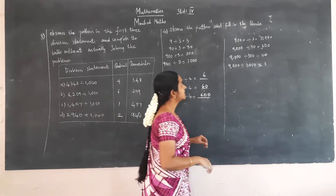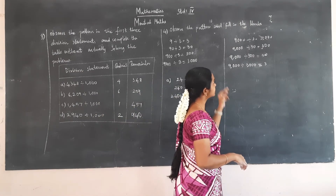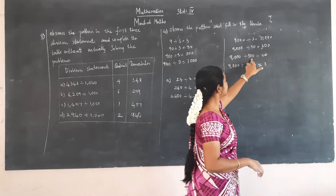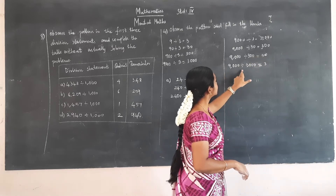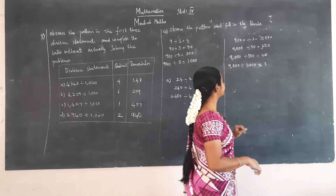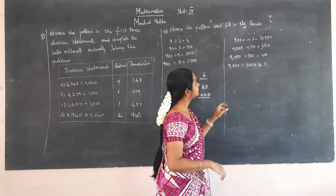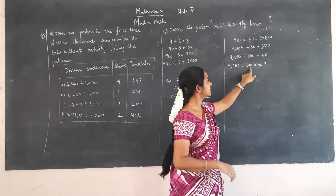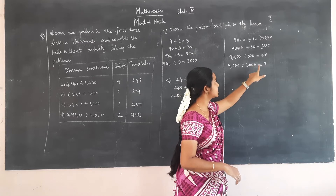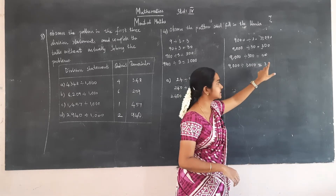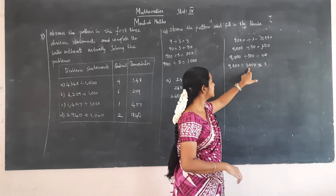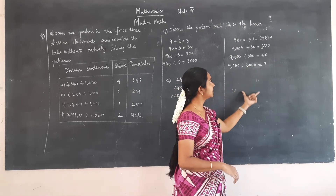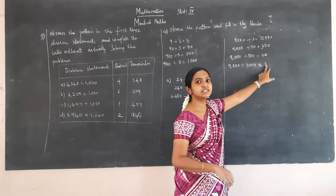Next: 9000 divided by 3 is 3000. 9000 divided by 30 is 300. 9000 divided by 300 is 30. 9000 divided by 3000 is 3. You can see that as the divisor increases, the quotient decreases. The divisor is going on increasing, and as the divisor increases, the quotient decreases.